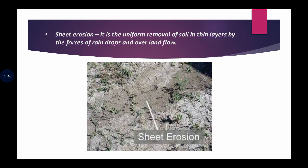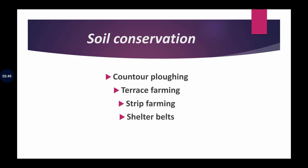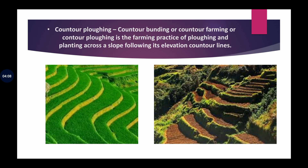Now our next topic is soil conservation. Abhi humne padha soil erosion kya hota hai, kaise hota hai. Ab hum padhenge soil conservation — yaani ki hum mitti ko conserve kaise kar sakte hain, usko remove hone se kaise bacha sakte hain. There are many methods. Sabse pehle hum discuss karenge contour flowing (contour plowing) ko, jo hilly areas mein soil ko erode hone se bachane ke liye use ki jaati hai — plowing against the direction of the slope — jis se paani ke saath mitti ki fertility beh nahi jaati.